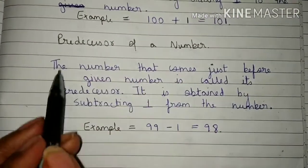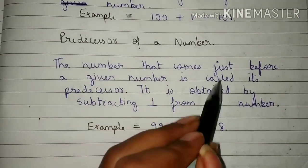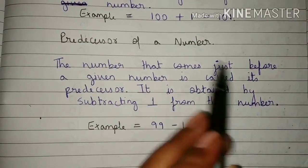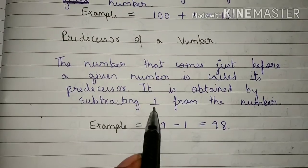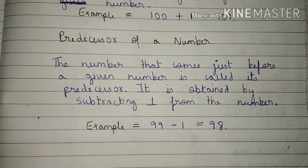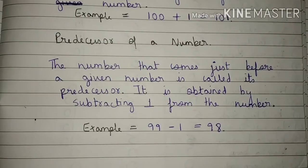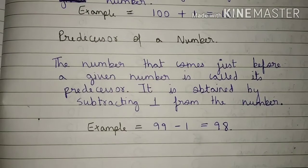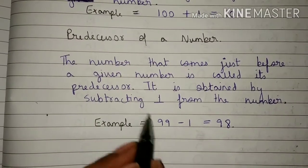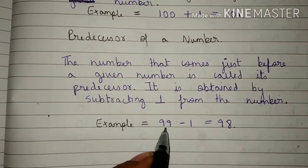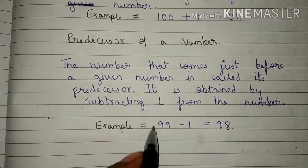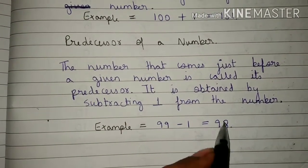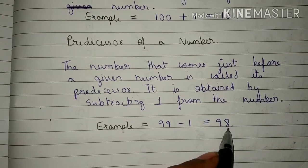What is a predecessor? The number that comes just before a given number is called its predecessor. It is obtained by subtracting 1 from the number. For example, if a number is 99, the number that comes before 99 is 98, so 98 is called the predecessor of 99.